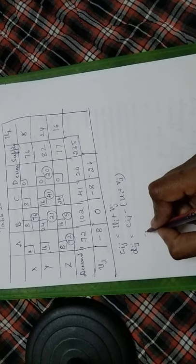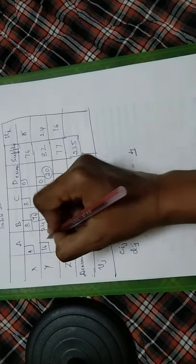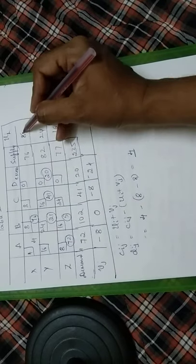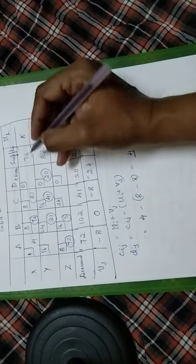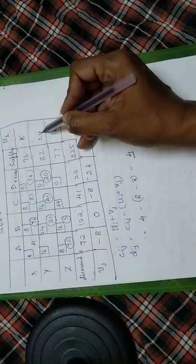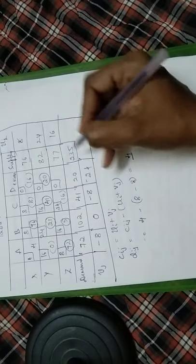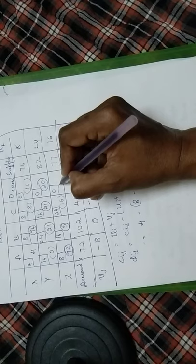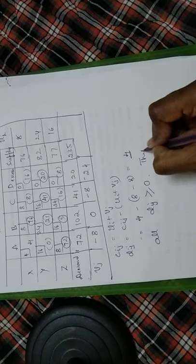Using the opportunity cost formula d_ij = c_ij - (u_i + v_j), we calculate d_ij for all unallocated cells. For example: 4 - 8 - (-8) = 4; 8 - 0 = 8; 0 - (-16) = 16; 16 - 16 = 0; and 8 - (-8) = 8. All d_ij values are greater than or equal to 0, confirming this is the optimal solution.